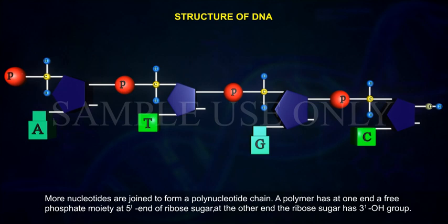A polymer has at one end a free phosphate moiety at the 5' end of ribosugar. At the other end, the ribosugar has a 3' OH group.